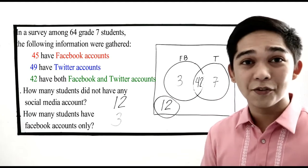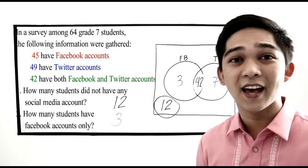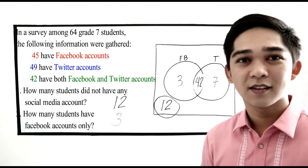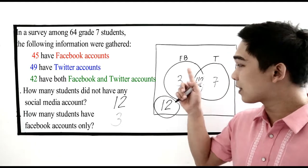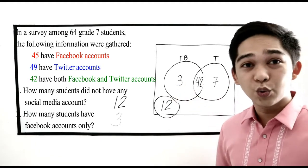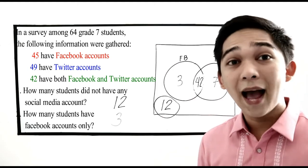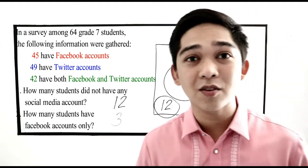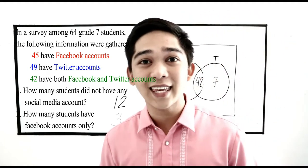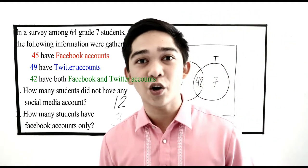That is how you solve using a Venn Diagram when there are 2 categories. Now, what if we have 3 categories?